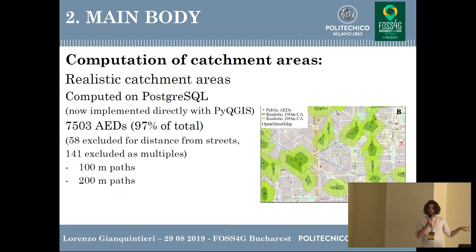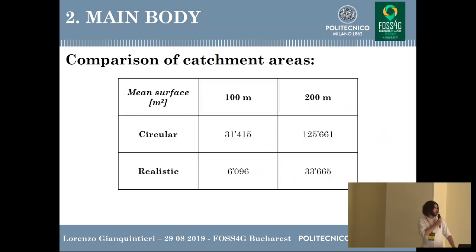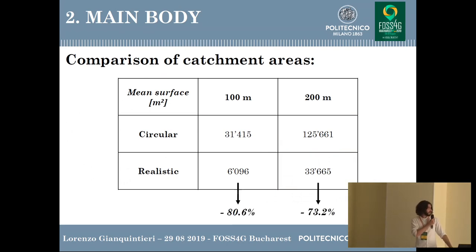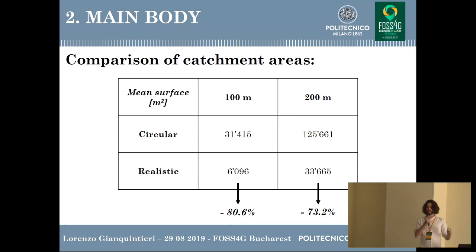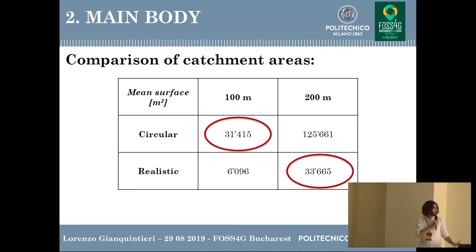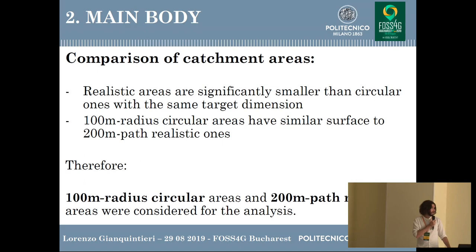The path measure considered is also 100 and 200 meters. Looking at the mean area, the difference between the circular and the realistic approach when considering the same dimensioning is significant — they cannot be considered equivalent. However, the circular areas with a 100-meter radius and the realistic areas with paths of 200 meters resulted in quite a similar area. Therefore, we decided to compare these two mappings statistically in the following analysis.